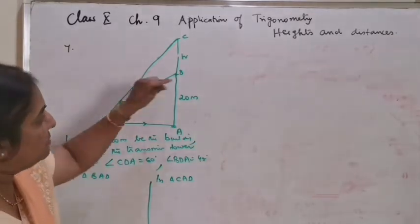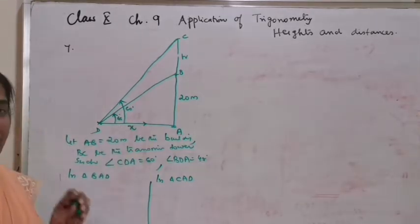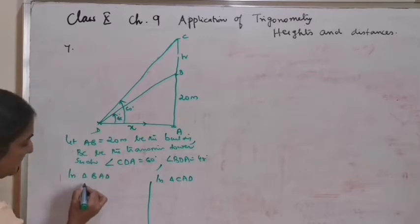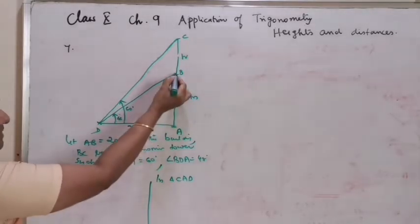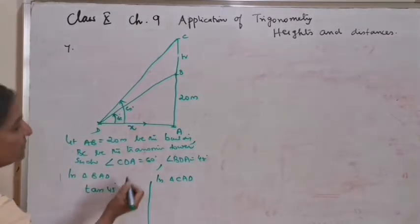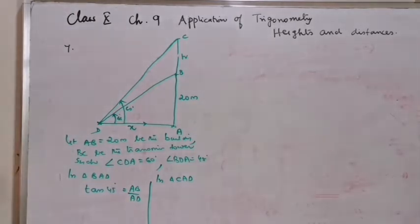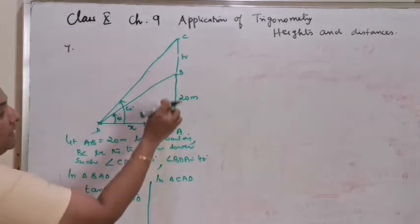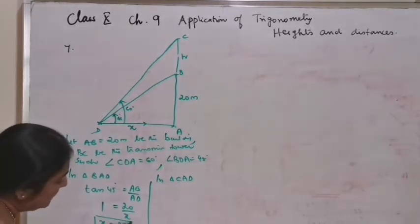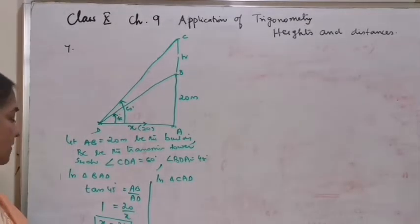After identifying the triangles, see the measures of the sides. In triangle BAD, the length AB is known and the angle ADB is 45 degree, so directly you can get the value of the adjacent side by the tan ratio. For angle ADB, you have the opposite side and you need to get the adjacent side. Let's name AD length as X. In triangle BAD: tan 45 is equal to AB divided by AD. Tan 45 value is 1, equals 20 by X. By cross multiplication, X equals 20.